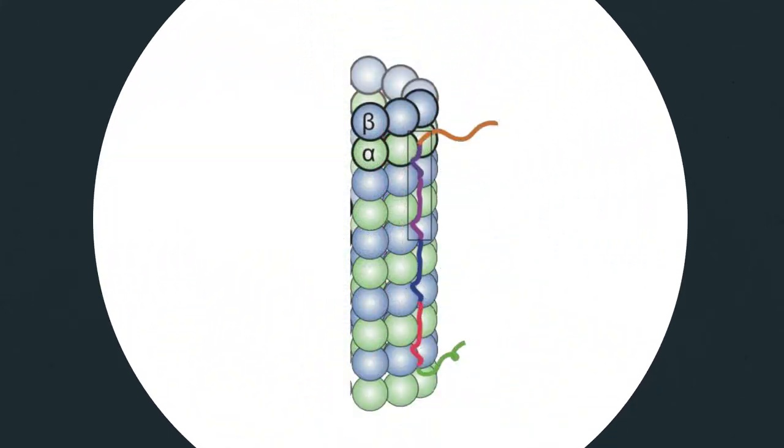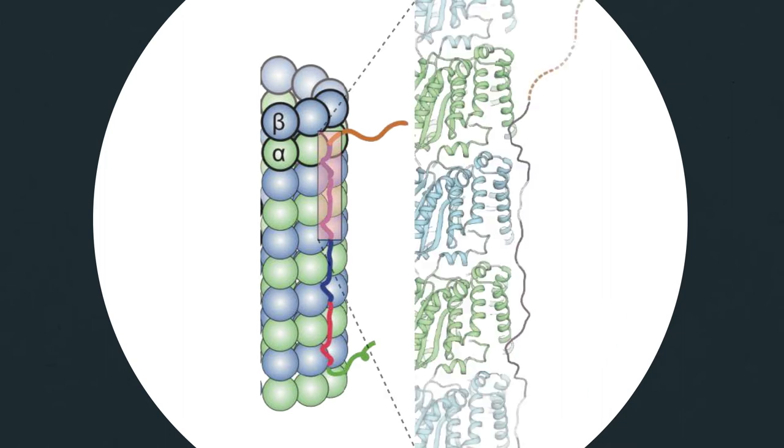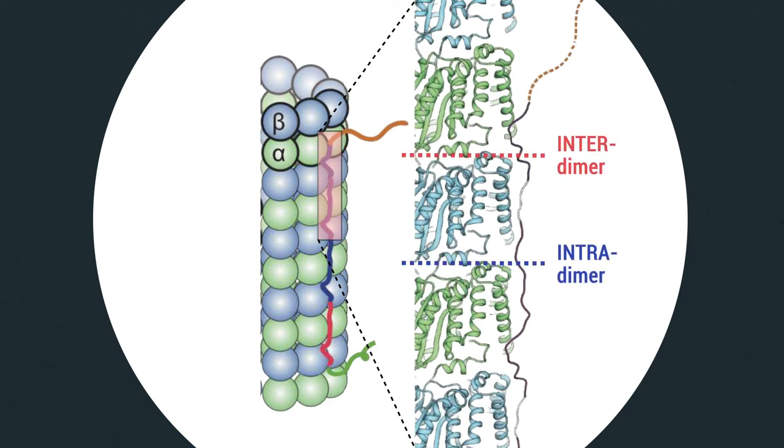Our microtubule tau structures lead to a model in which each tau repeat has an extended conformation that spans both intra- and inter-dimer interfaces centered on alpha-tubulin and connecting three tubulin monomers.